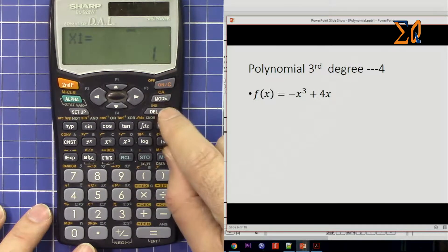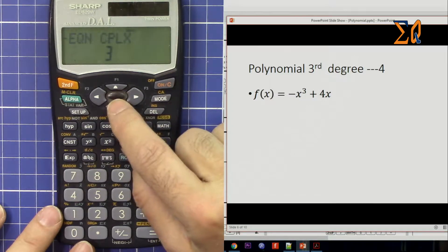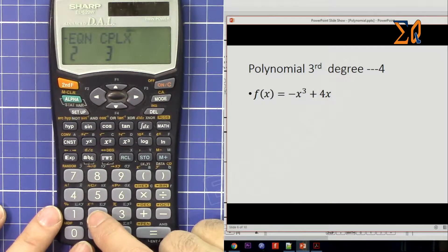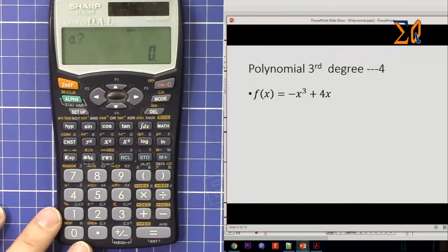So now let's go for the third degree. Press mode, go down to equation, press 2, and then go down to cubic. Now the same thing, we have ax³ + bx² + cx + d.